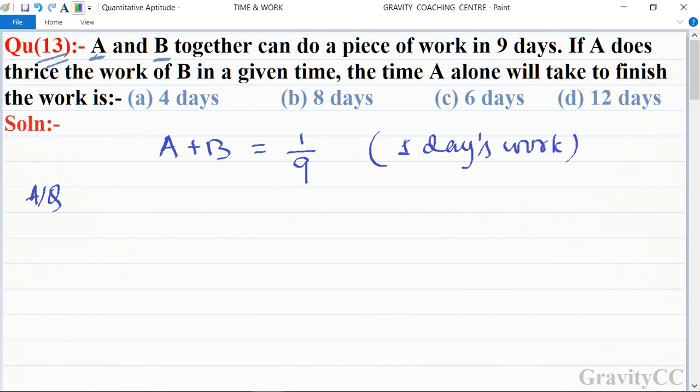According to the question, A's one day work is equal to thrice B's one day work.